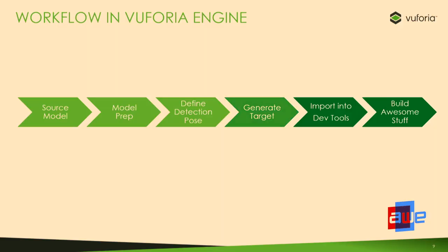Once you have your model, you need to do a little bit of prep work — reducing polygon count, removing articulating parts, removing transparent surfaces. At this point, you take the model and put it through one of our tools to generate what we call a detection pose. Once you generate your detection pose, you generate a model target database — a special data structure that Euphoria Engine understands and uses to detect the object. Then you import that package into your development environment: Unity, Xcode, Visual Studio, or Android Studio.